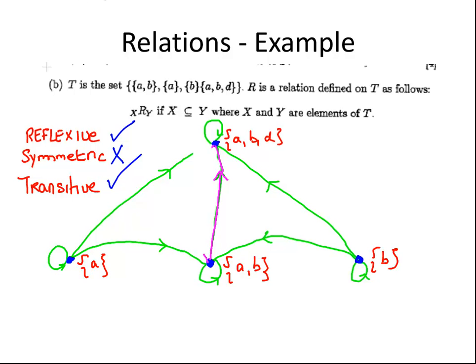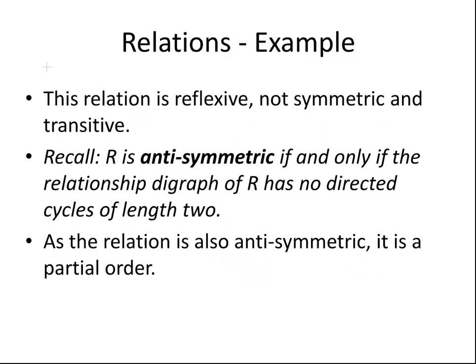So we don't have any, so we can say that—there are no directed cycles of length 2, that means the relationship is anti-symmetric.